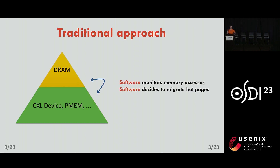The traditional approach to achieve that is done in software. You have a software daemon that monitors memory accesses and determines which pages are hot — frequently accessed — and which pages are cold — infrequently accessed. Once the software has determined what is hot and what is cold, it migrates the pages between the different tiers.